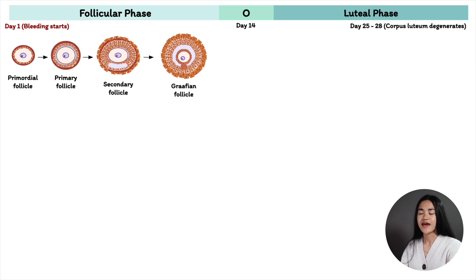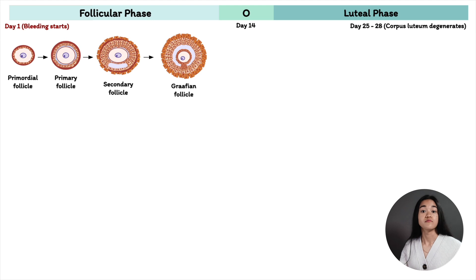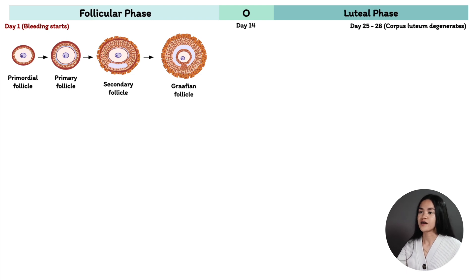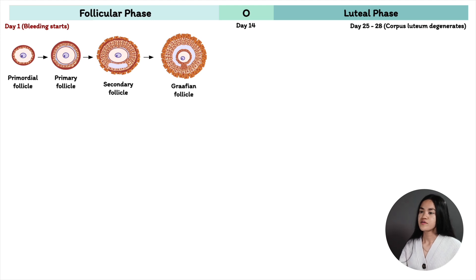Only one egg is ovulated every menstrual cycle. At the start of each cycle, 10 to 25 pre-antral follicles develop into larger antral follicles — so from primary follicles to secondary follicles. Follicular growth is stimulated by FSH and LH.